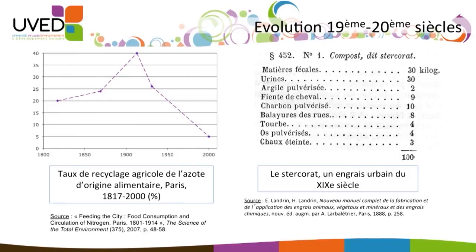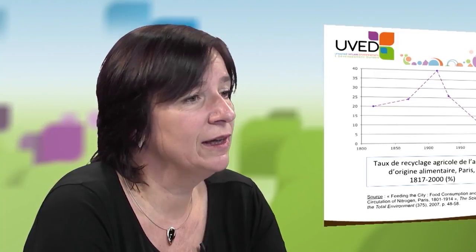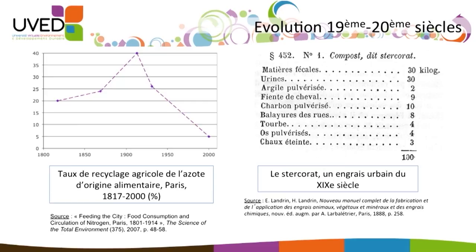On this slide, you can see a graph showing the considerable increase in the recycling of nitrogen with a peak at 40%, which is huge compared to the current recycling rate, which is much lower. In the 19th century, recovering urban nitrogen was seen as essential for food production because we were short of fertilizers and the population was increasing, so increasing the yield was absolutely crucial. To the right is the composition of a very popular fertilizer in the 19th century: compost with fecal matter, urine, horse manure, and all this material being recovered in cities.